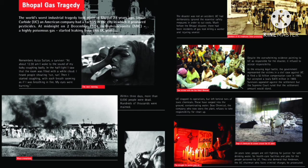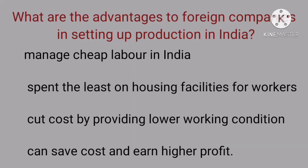After the Bhopal gas tragedy, in response to the pressure from the gas victims and environmental activists, the government introduced new laws for the protection of industrial workers and the environment. One reason why foreign companies come to India is for cheap labor. They can spend the least on housing facilities for workers and cut costs by providing lower working conditions, including lower safety measures, to earn higher profit.